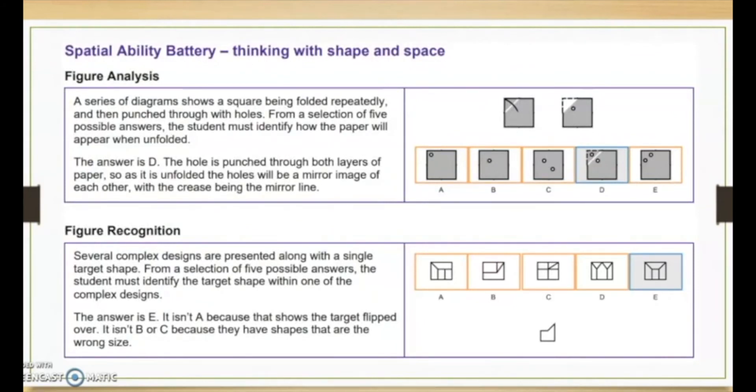Here we just see what it's like, the battery of thinking with shape and space. So let's look at this top one. This just shows that it's not the easiest of tests to be completing. We see a series of diagrams shows a square being folded repeatedly and then punched through with holes. From a selection of five possible answers the student must identify how the paper will appear when unfolded. The answer here is D. The hole is punched through both layers of paper so as it is unfolded the holes will be a mirror image of each other with the crease being the mirror line. Hopefully that makes sense.